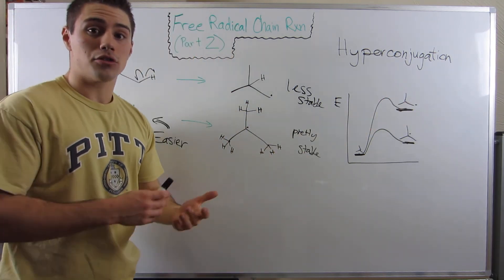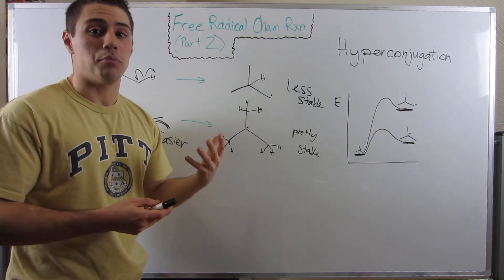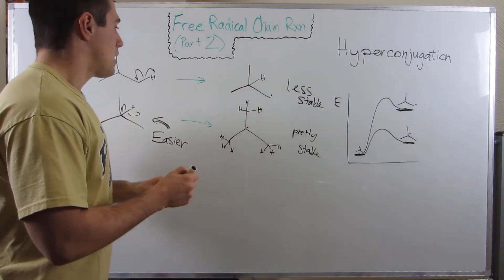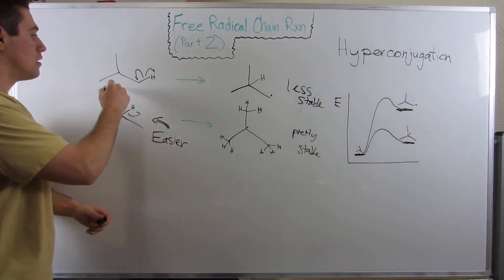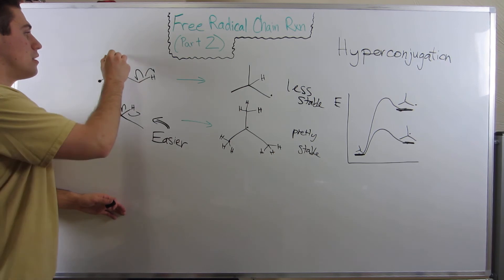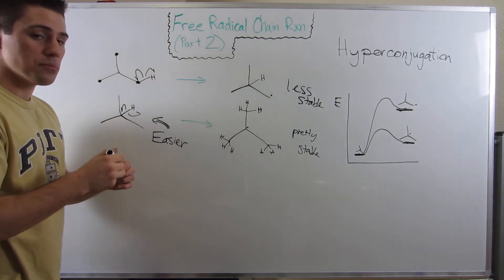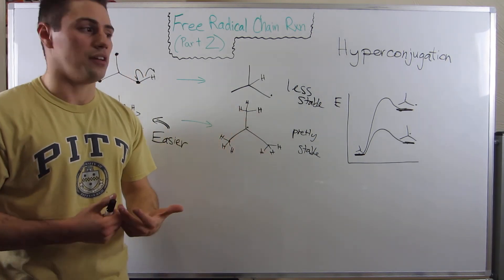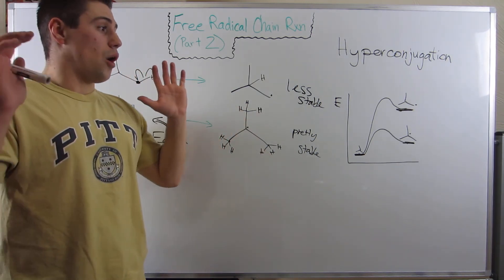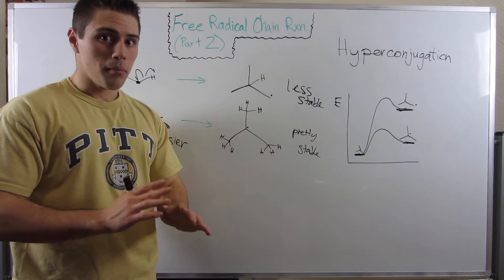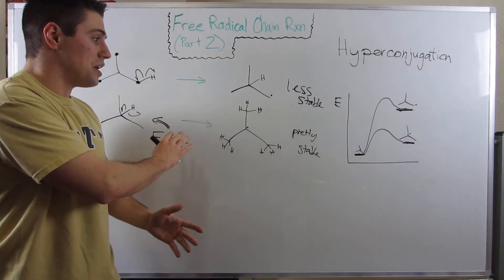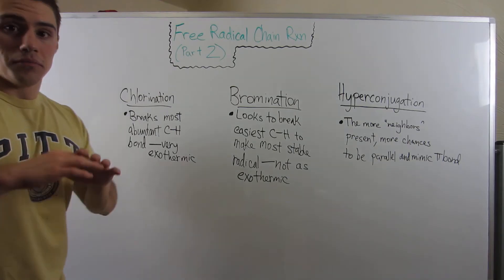For chlorination, you're just going to break whatever CH bond is most prevalent. And think about it. Over here, there's three CH bonds here, three CH bonds here, three CH bonds here. That's the most prevalent, most abundant CH bond. Now, so hopefully that made sense. I'm going to erase a bunch of this, and I'm going to try and summarize it clearly.